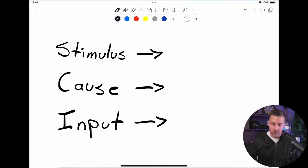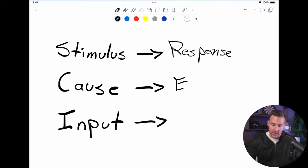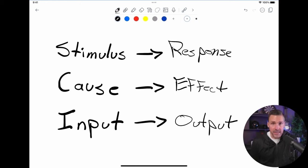Nothing happens without some kind of input. Now, on that note, we can do this. We need some kind of stimulus to give a response. We need some kind of cause to lead to an effect. We need some kind of input to lead to an output.